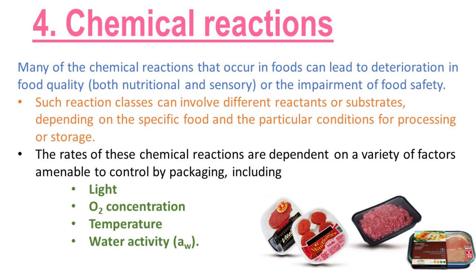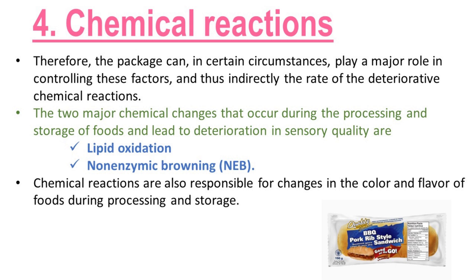Many of the chemical reactions that occur in foods can lead to deterioration in food quality, both nutritional and sensory, or the impairment of food safety. Such reaction classes can involve different reactants or substrates, depending on the specific food and the particular conditions for processing or storage. The rates of these chemical reactions are dependent on a variety of factors amenable to control by packaging, including light, oxygen concentration, temperature, and water activity. Therefore, the package can, in certain circumstances, play a major role in controlling these factors, and thus indirectly the rate of the deteriorative chemical reactions. The two major chemical changes that occur during processing and storage of foods and lead to deterioration in sensory quality are lipid oxidation and non-enzymic browning.